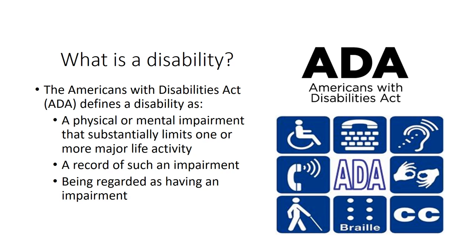In order to be eligible for accommodations because of a disability, the disability has to limit a major life activity, like breathing, walking, talking, hearing, seeing, eating, learning, reading, concentrating, or thinking. However, even if you use auxiliary aids, like a sign language interpreter, or take medication, you could still be considered a person with a disability because the major life activity is still affected.